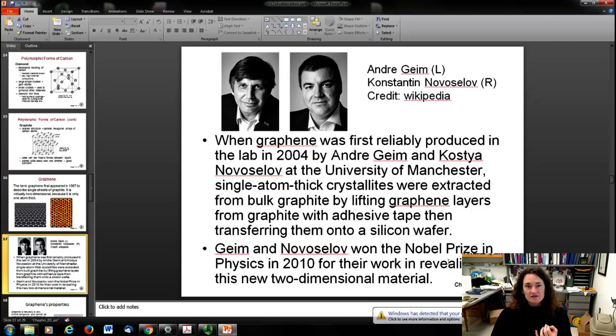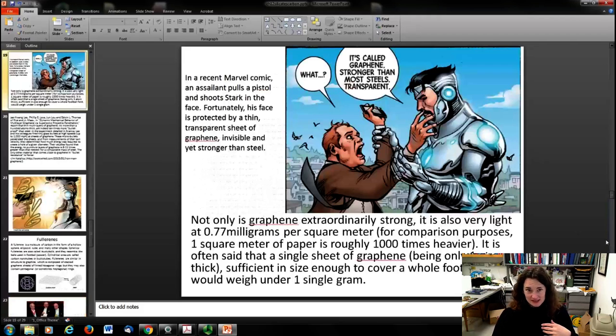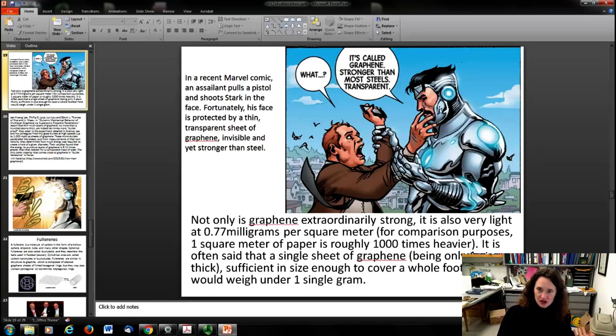What are those fascinating properties? Well, graphite is naturally very brittle and can't be used as a structural material because of the weakness of the shear planes, although you can mix it into steels. But graphene is the strongest material ever recorded. It's more than 300 times stronger than A36 structural steel at 136 gigapascals, and it's more than 40 times stronger than diamond, but it's so thin it's transparent. Fascinating stuff. This is a Marvel comic. Marvel's really quick to jump on some great technological advances. In this one, this villain shoots Iron Man in the face, but Iron Man's face is protected by a thin sheet of graphene. It's called graphene, stronger than most steels and transparent.